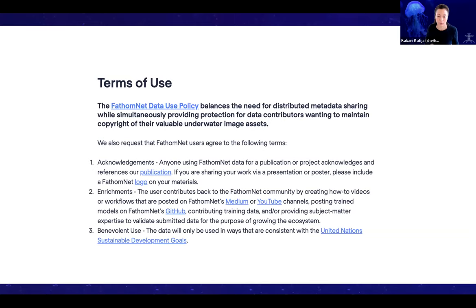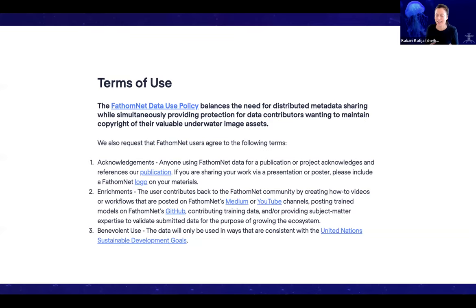Next is enrichments — ways in which users can contribute back to the FathomNet community. That can be by creating how-to videos or workflows posted on our Medium or YouTube channels, posting and sharing your FathomNet-trained models on GitHub in the model zoo, contributing training data or labeled data to the database, or providing subject matter expertise to help validate or verify submitted data. If we're ever going to reach our goal of 500 to 1000 images for the currently 200,000 different animals that have been described, we've got a long way to go — but we will get there with community contributions.